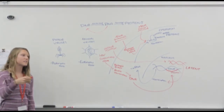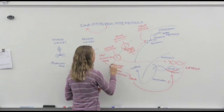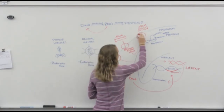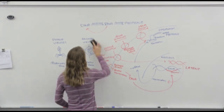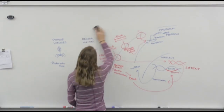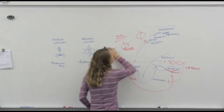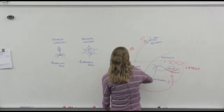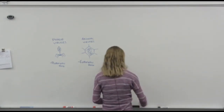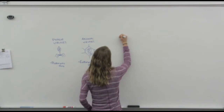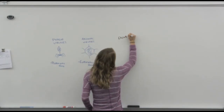Before I talk about phage viruses, I want to talk about one more thing — this step, right here. What is this? Their entry. So let's talk about that real fast. There are two ways that an animal virus can enter a host cell. I like to call it envelope fusion because it makes your life a lot easier.